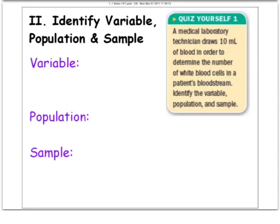Now, one of the things you are going to be asked on a quiz and a test both is you'll be given a scenario and you need to identify the variable, the population and the sample that is being studied. Here we go. Here's a question for you. A medical laboratory technician draws 10 milliliters of blood in order to determine the number of white blood cells in a patient's bloodstream. Identify for me the variable, the population and the sample. The variable is what's being studied. So why don't you just take a moment, pause the video and see if you can figure out these three on your own and then replay the video and we'll see if you got it right.